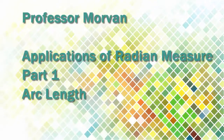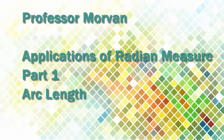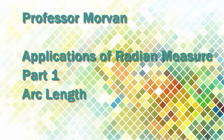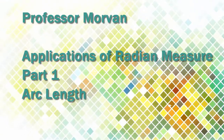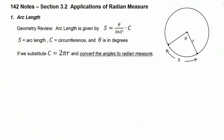In part one of our lesson on applications of radian measure, we're going to study arc length. In your geometry class, you learned that arc length is given by the equation S equals theta over 360 times C, where S is the arc length, C is the circumference, and theta was in degrees.